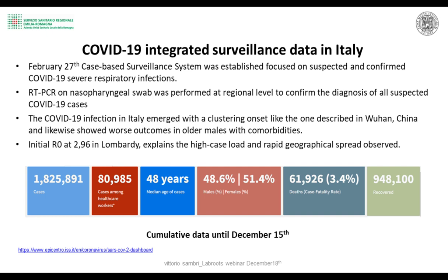The initial reproduction number R0 was 2.96 in Lombardy, which explains very well the high caseload and rapid geographic spread observed. Italy has had 1,800,000 cases, with about 80,000 healthcare providers involved. The median age for current cases is 40-80, which is a major difference from the first wave where the median age of affected individuals was well above 65.